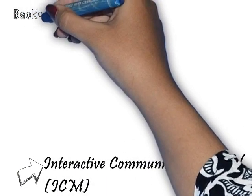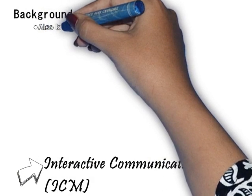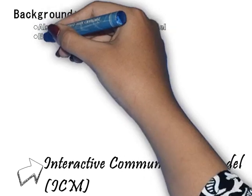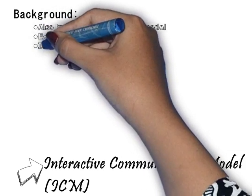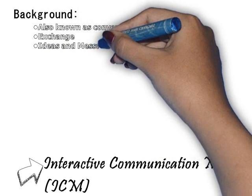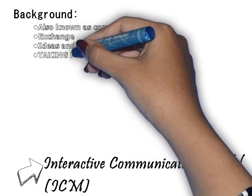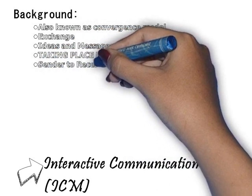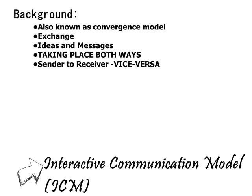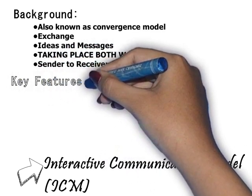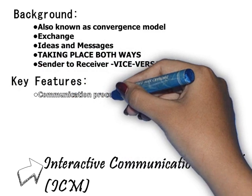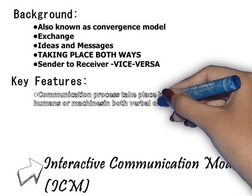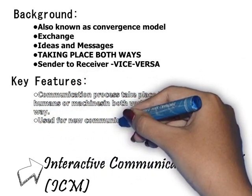Now let's talk about the interactive communication model, also known as the convergence model. This type of model involves the exchange of ideas and messages simultaneously. They take place both ways — the sender receives and sends messages, vice versa. However, in this type of model, the use of new channels can emerge, and that is actually highlighted in this particular model of communication.